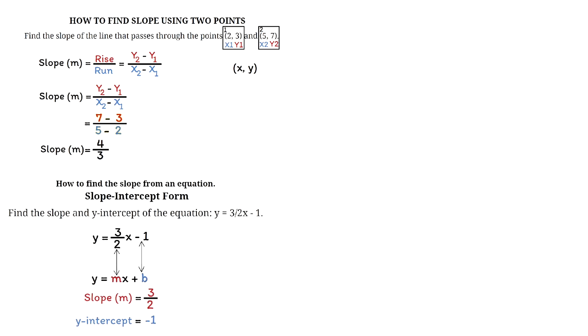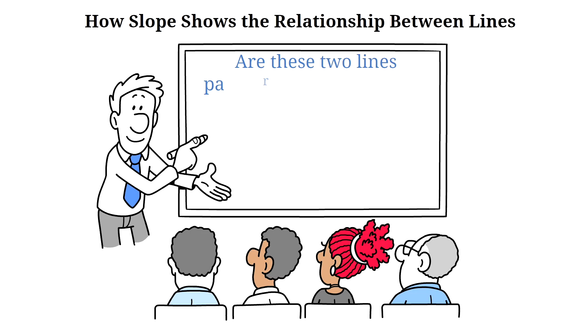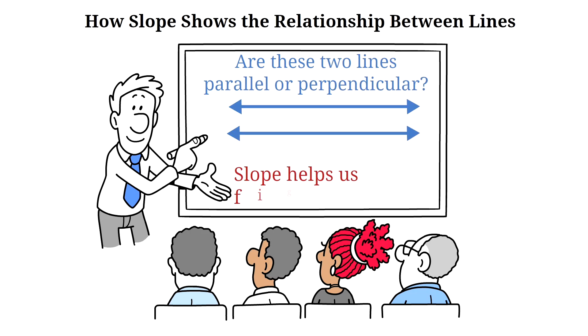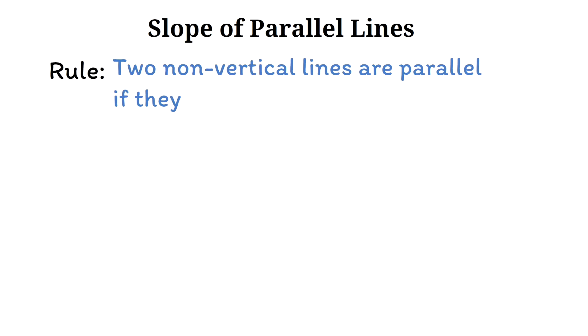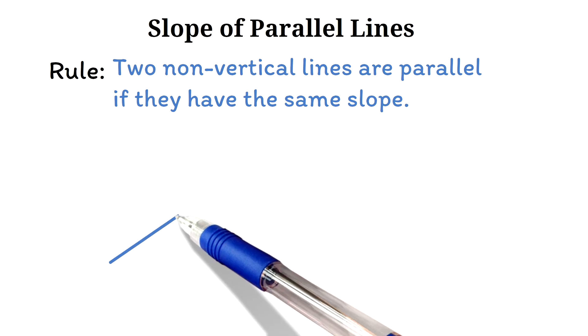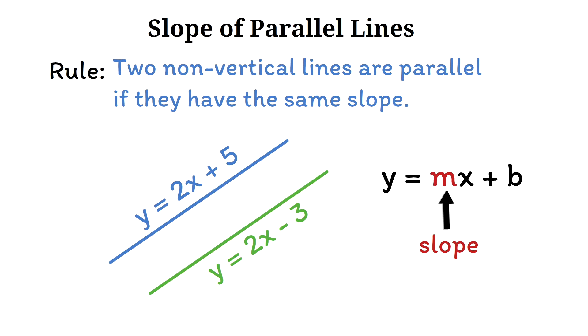Now that we've learned how to find slope and graph lines, there's one more important idea: how slope helps us understand the relationship between two lines — specifically, whether they are parallel or perpendicular. Parallel lines never meet and move in the same direction. In algebra, two non-vertical lines are parallel if they have the same slope. For example, y equals 2x plus 5 and y equals 2x minus 3 both have a slope of 2, so they are parallel.